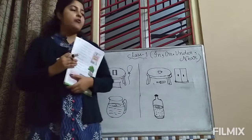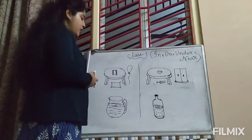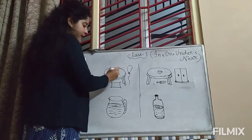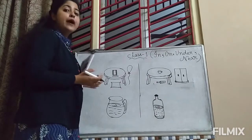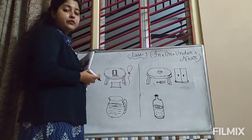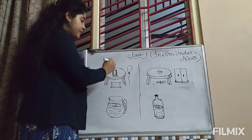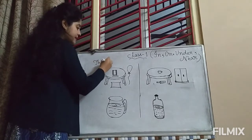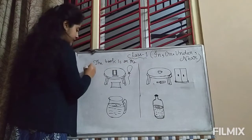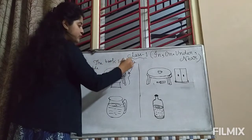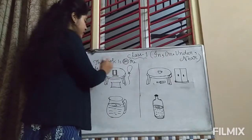I hope all of you can see on the board that I have drawn some pictures. So can you say where is the book? This is the book and this is the table, so where is the book? The book is on the table. So here I have used 'on' to say about the position of the book.